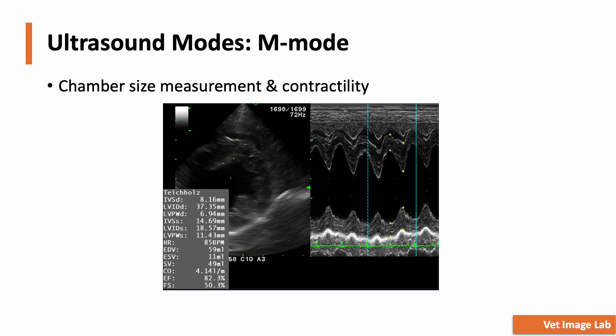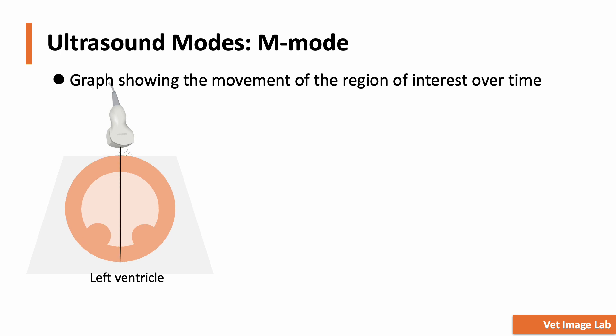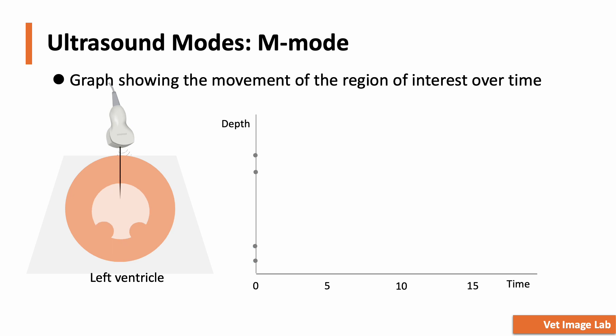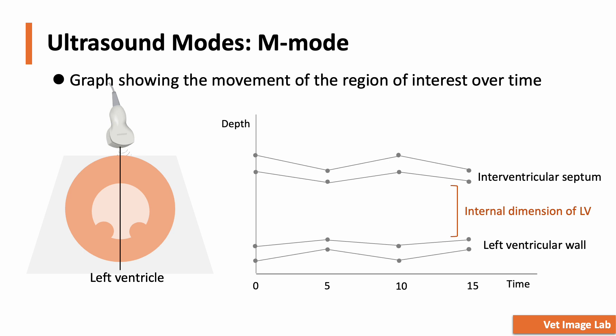M-mode, or motion mode, is derived from B-mode imaging, but instead of showing a full two-dimensional image, it represents motion over time along a single scan line. M-mode is particularly valuable for tracking movement over time and measuring chamber sizes and wall thickness with precision. First, we obtain a parasternal long-axis or short-axis view in B-mode to identify the area of interest. Then, a single vertical scan line — an M-mode cursor — is placed across the heart's structures, typically through the left ventricle. The ultrasound machine continuously records echoes along the scan line over time, displaying left ventricular motion as a waveform graph. From this graph, we can measure chamber dimensions, wall thickness, and assess contractility.